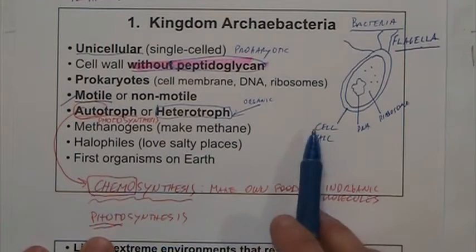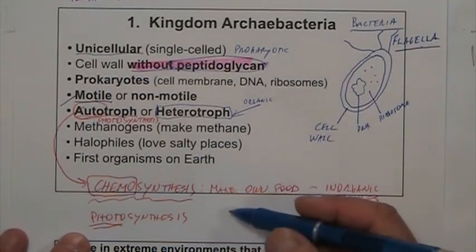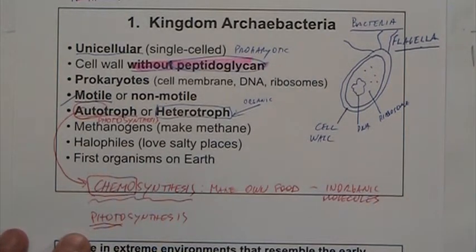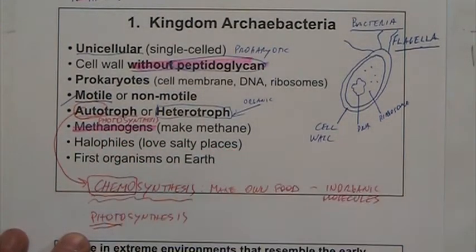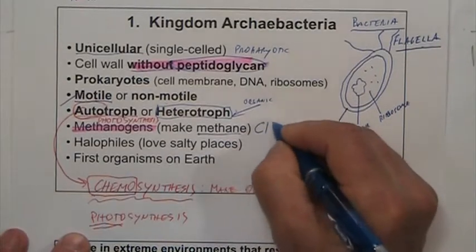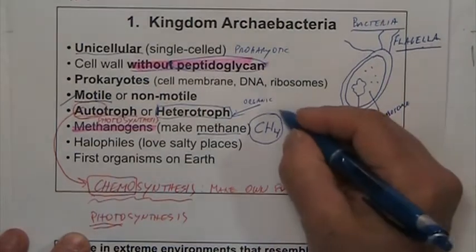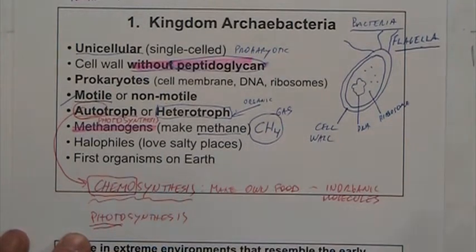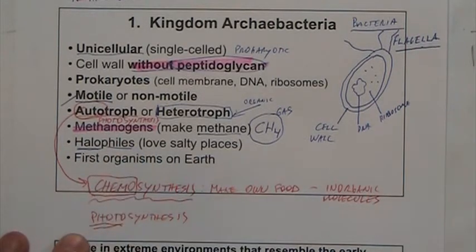Within this group, they always live in extreme environments — really harsh places. You'll see them with names like methanogens, which make methane (CH4). Methane is an organic molecule and a gas — actually the gas that many cows and even humans sometimes pass.